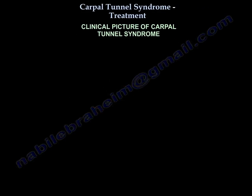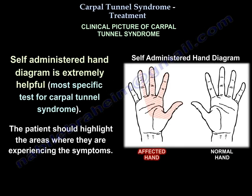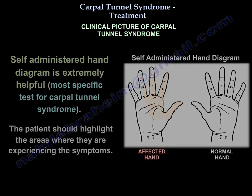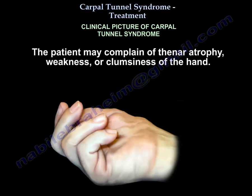A self-administered hand diagram is extremely helpful. It is the most specific test for Carpal Tunnel Syndrome. The patient should highlight the areas where they are experiencing the symptoms. The patient may also complain of thenar atrophy, weakness, or clumsiness of the hand.